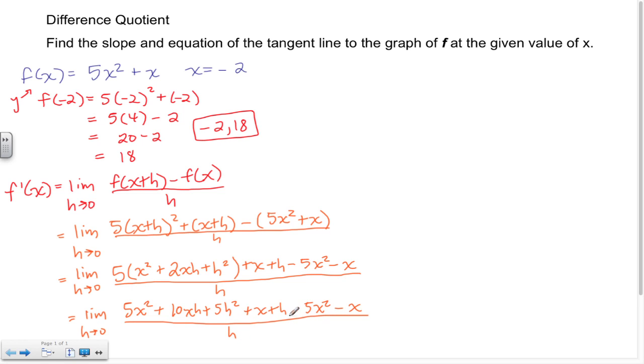Let's look for cancellations, and you should have cancellations, otherwise you've made a mistake somewhere. 5x squared and a negative 5x squared, I got a positive x and a negative x.